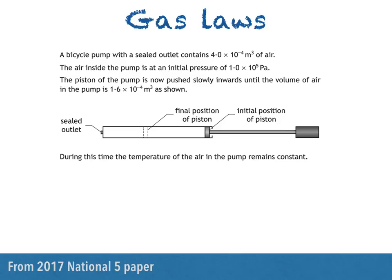A bicycle pump with a sealed outlet contains 4.0 times 10 to the negative 4 metres cubed of air. The air inside the pump is at an initial pressure of 1.0 times 10 to the power 5 pascals. The piston of the pump is now pushed slowly inwards until the volume of the air in the pump is 1.6 times 10 to the negative 4 metres cubed, as shown. During this time the temperature of the air in the pump remains constant.